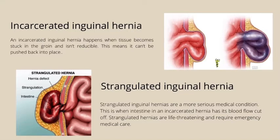Incarcerated inguinal hernia: an incarcerated inguinal hernia happens when tissue becomes stuck in the groin and isn't reducible, meaning it can't be pushed back into place. Strangulated inguinal hernia: strangulated inguinal hernias are a more serious medical condition. This is when the intestine in an incarcerated hernia has its blood flow cut off. Strangulated hernias are life-threatening and require emergency medical care.